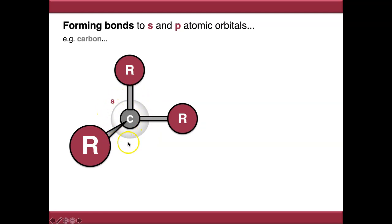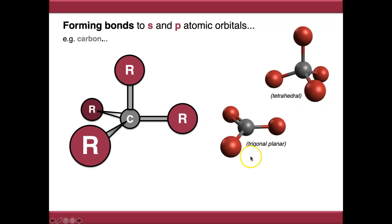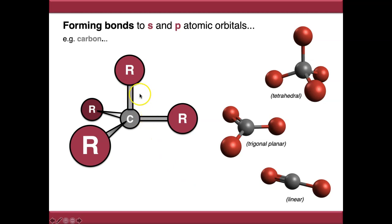We've then got to form our fourth bond to the s orbital. But does this look like any molecule we've seen in organic chemistry? Not really — all single-bonded carbon is tetrahedral with bond angles of 109.5 degrees, double-bonded carbon is trigonal planar, and triple-bonded carbon is linear. Nowhere do we get these 90-degree bond angles, so something's not quite right here.